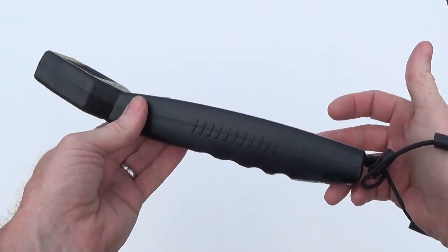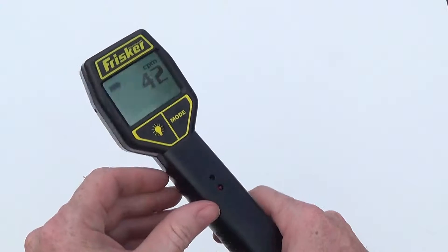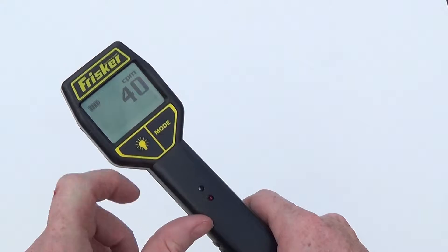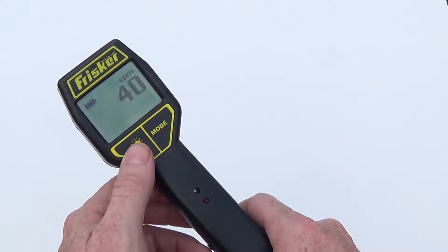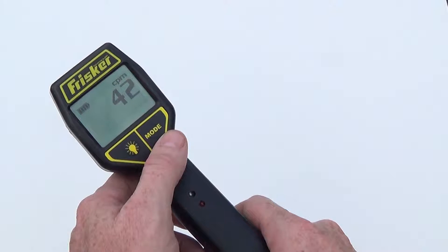the Frisker is a very simple to use device with two buttons located right below the LCD screen. On the left you have the backlight button and on the right you have the mode button.